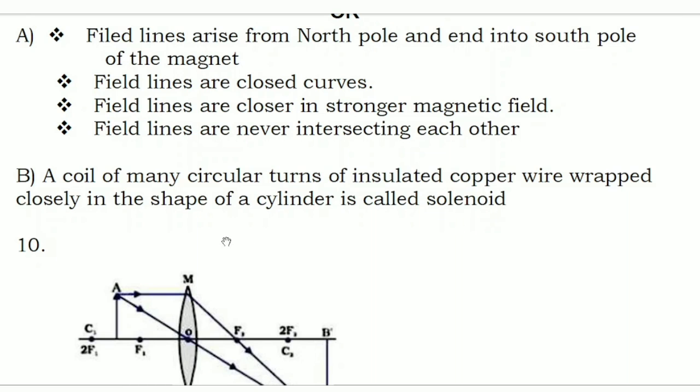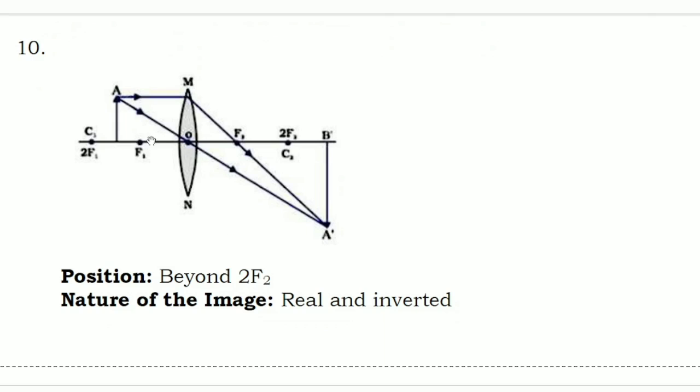Tenth question: draw the ray diagram of the image formed when the object is kept between F1 and 2F1 of a convex lens, and with the help of the diagram mention the position and nature of the image formed. F1 is the principal focus of the lens. The ray diagram is very important because the same type of question will be in your final exam. You should learn the ray diagram and know the position and nature of the image. The image is formed beyond 2F2 and the nature of the image is real and inverted. The diagram carries one mark; position and nature carry two marks.